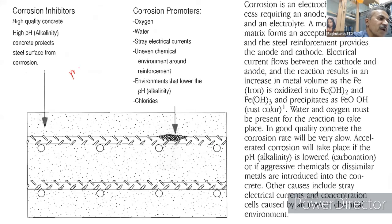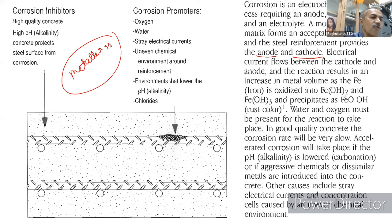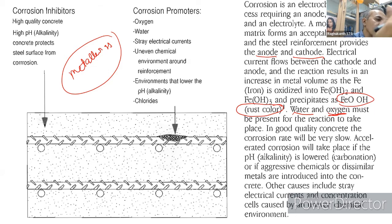For corrosion to occur, three things are needed: an anode, a cathode, and an electrolyte. The surrounding concrete acts as the electrolyte, and the reinforcement rod provides both anode and cathode. When corrosion starts, electric current flows from cathode to anode; iron is oxidized and eventually rust forms. Water and oxygen are also required for the corrosion reaction.